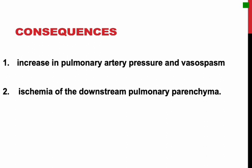Two important consequences of pulmonary arterial occlusion. The first is an increase in the pulmonary arterial pressure and vasospasm. The increased pulmonary arterial pressure happens due to blockage of flow and vasospasm caused by the release of mediators such as thromboxane A2 and serotonin. If a major vessel is occluded, an abrupt increase in pulmonary artery pressure will follow, and the heart will be pumping against higher resistance, resulting in decreased cardiac output and right-sided heart failure, called acute cor pulmonale. In some cases, this may result in sudden death.